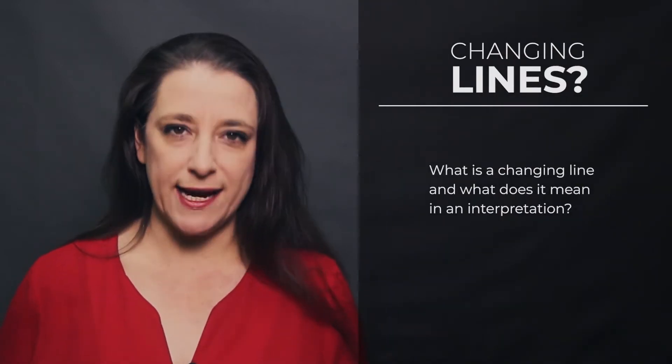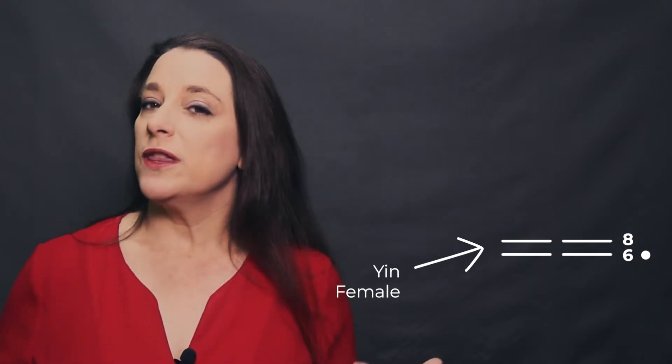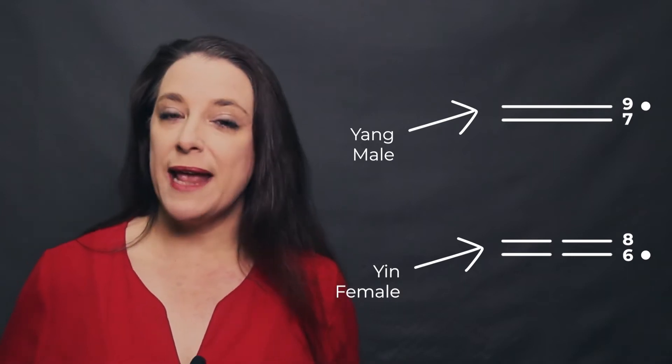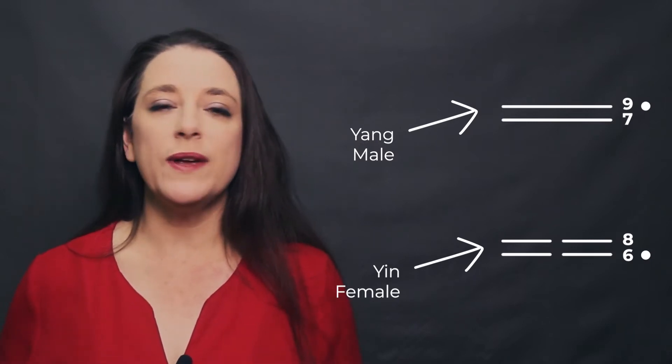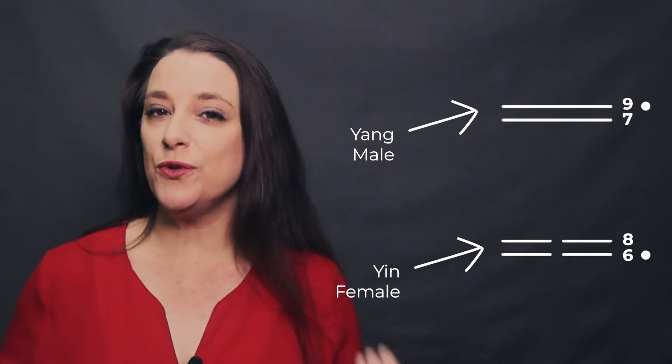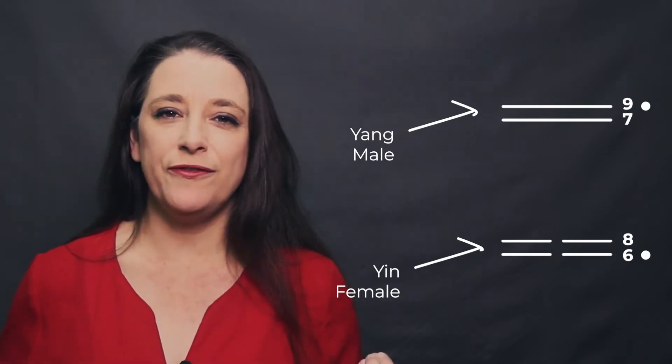In our last episode we spoke about how to cast the I Ching coins. One of the key questions coming out of that process is: what is a changing line? When we cast the coins, whether we got a six or an eight those were female yin lines. Whether we cast a seven or a nine that was a male, active yang line. Our changing lines are wherever we have a nine — a moving or changing male line — or a six, a moving changing female line.